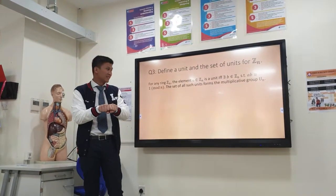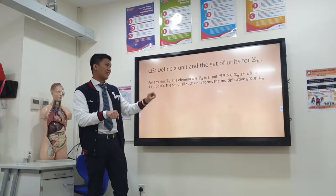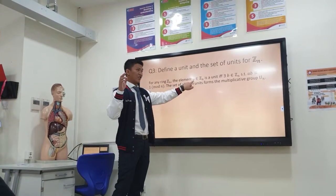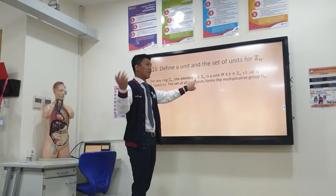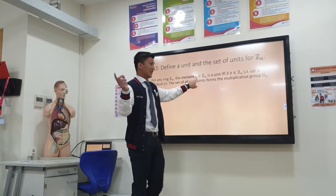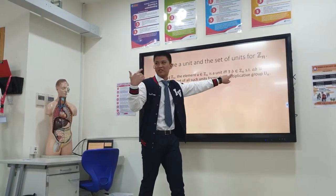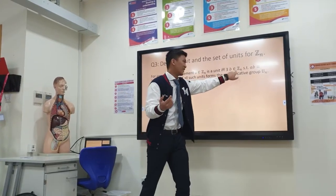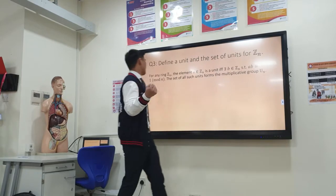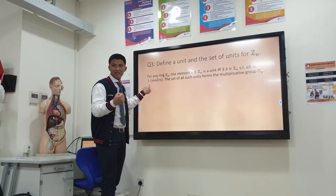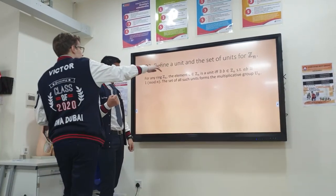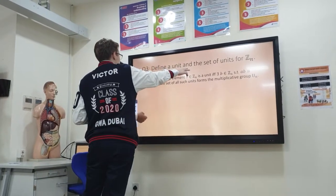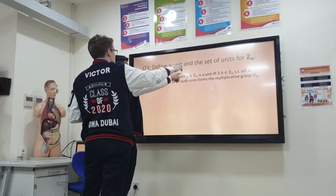Does that make sense? A unit in Zn — so what's a unit in Zn? A unit is U, right? It's U if and only if there exists some other number in Zn — or maybe the same number — such that they multiply to make 1. So B is just any number from the set, and U is the unit.